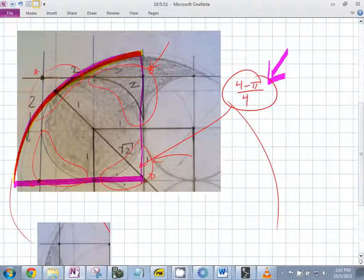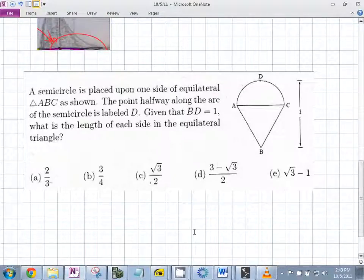So you don't even need to bother with trying to find the specific Batman thing. She found like the mini Batman and was finding the mini Batman a little easier. I think it was a lot easier. Is that pretty cool? I thought that was pretty cool. A semicircle is placed on one side of an equilateral triangle, as shown. The point halfway along the arc of the semicircle is D, so that's the highest point. Given that BD is 1, what is the length of each side of the equilateral triangle?